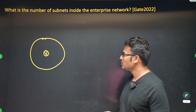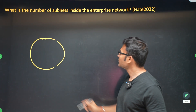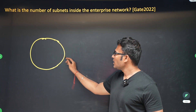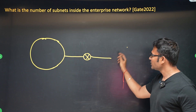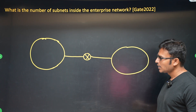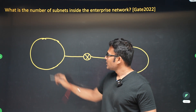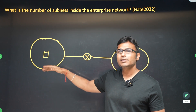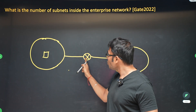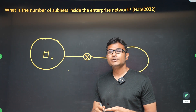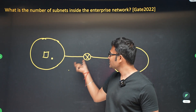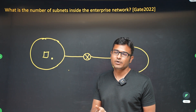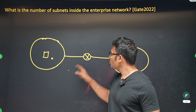Let me explain with another example. Say there is a network connected to a router, and that router is connected to another network. If a host has to send a message to the router in order to send a packet outside, the router must also be present in that network — otherwise you cannot communicate. Two hosts can communicate with each other only if they are present in the same network.